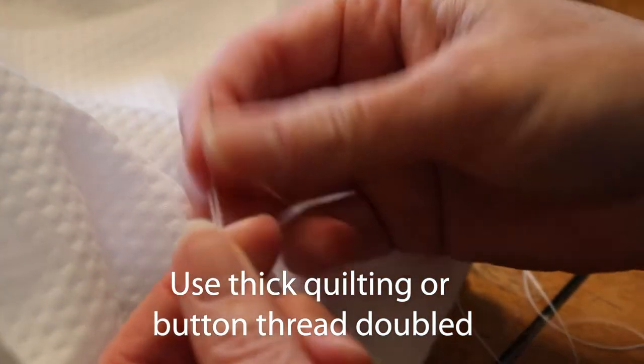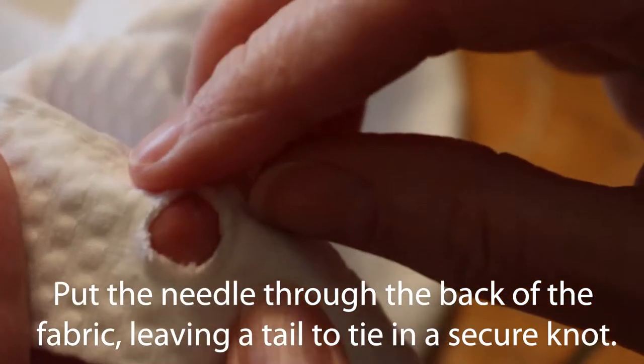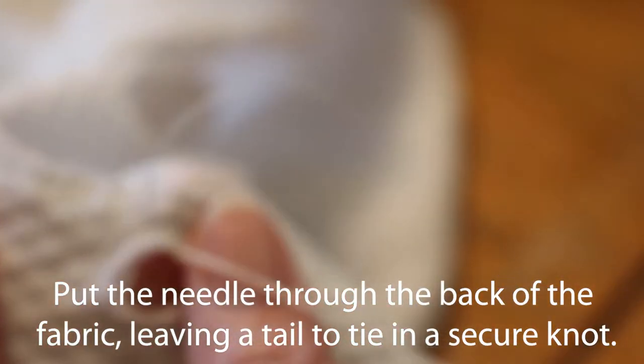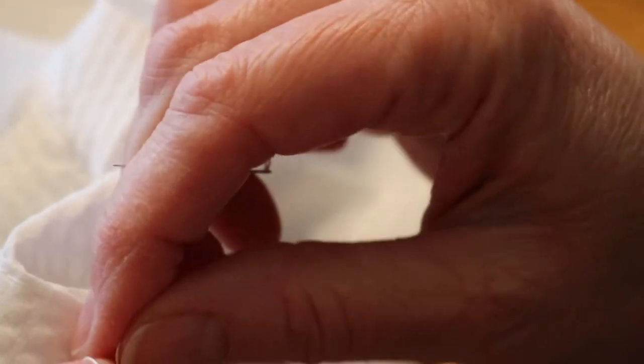Put one end of the thread through the needle and match the two ends of the thread up so that you're sewing with two pieces of thread for every time you make a stitch.